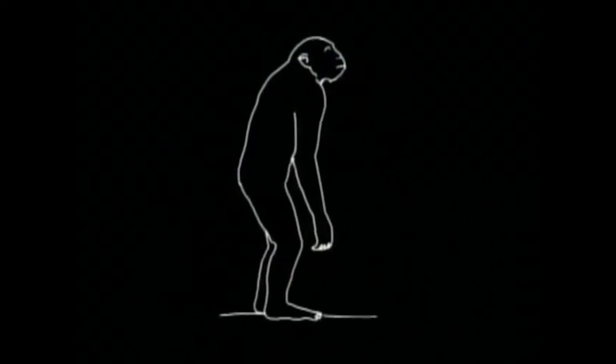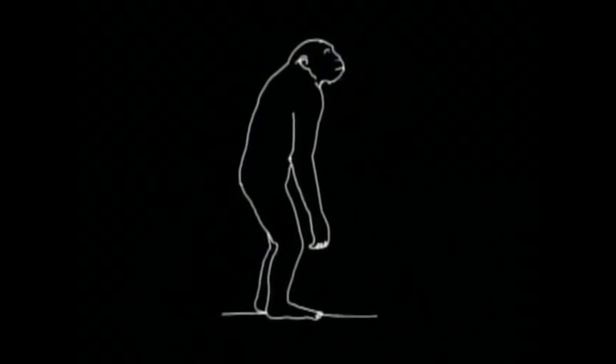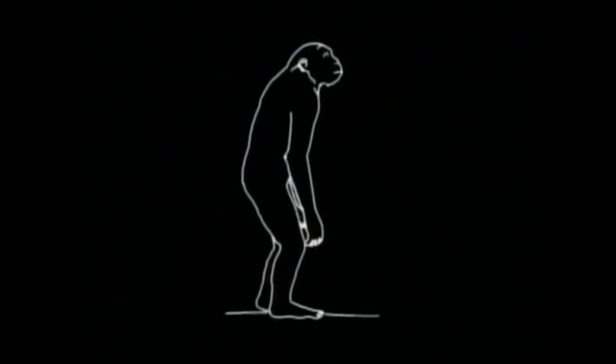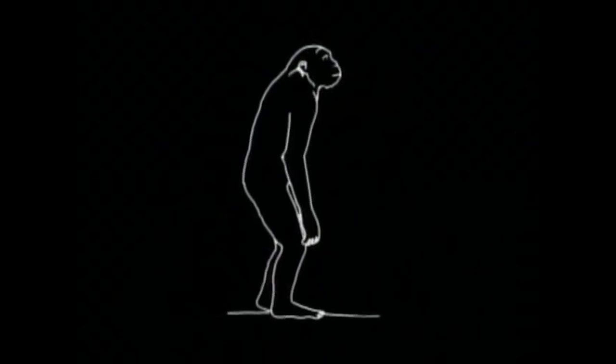By the time of the last ice age, most of the continents were in the positions that we know them today, and so we can trace the route our human ancestors took as they populated the lands of Earth, even on a modern globe.